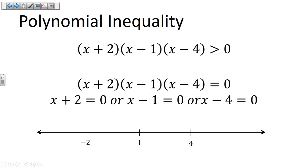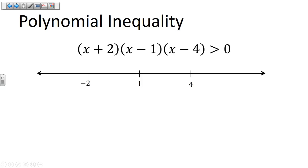I want to mark my zeros on the number line because my next step is to choose a number from each of the four regions. I'll choose a number from the leftmost region where x is less than negative two — negative three works fine. Between negative two and one, zero is the best number to plug in. Between one and four I'll choose a number, and for the last region greater than four I'll choose five. Make it simple on yourself — don't choose something like negative 112 or 842.